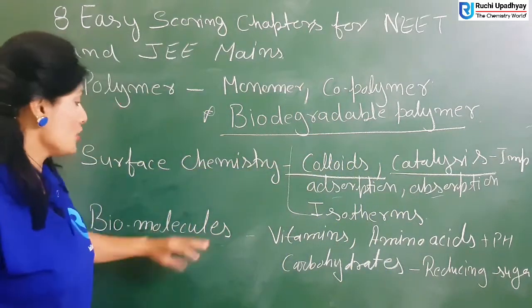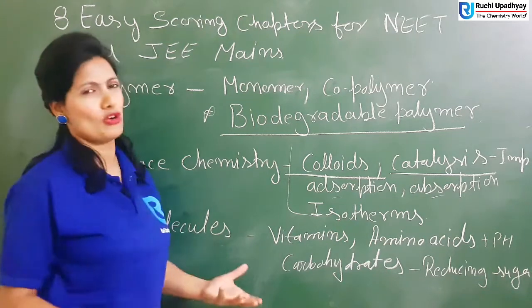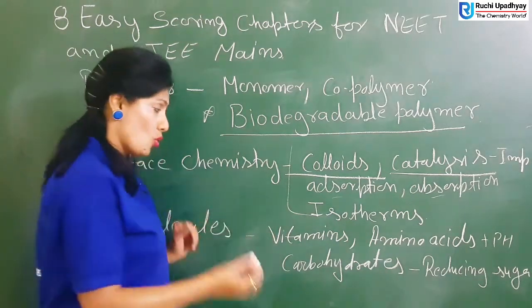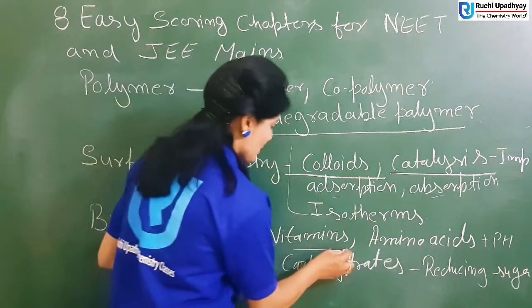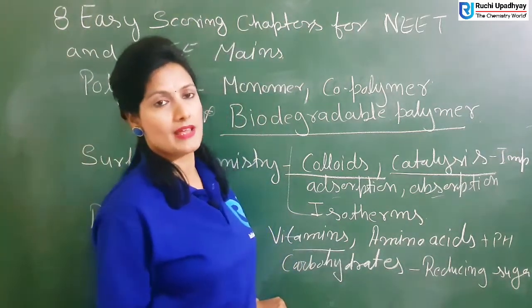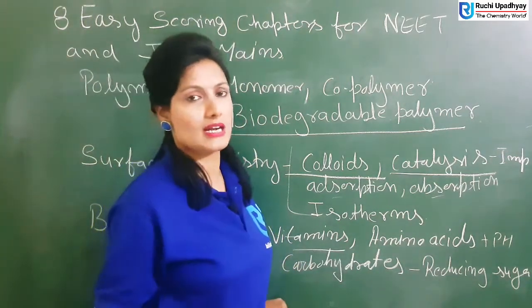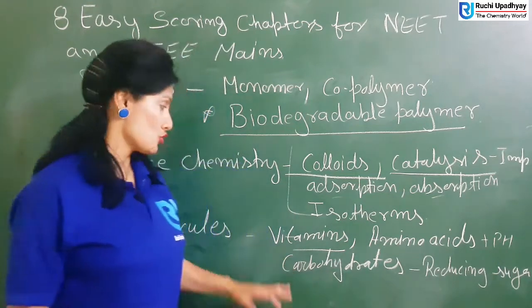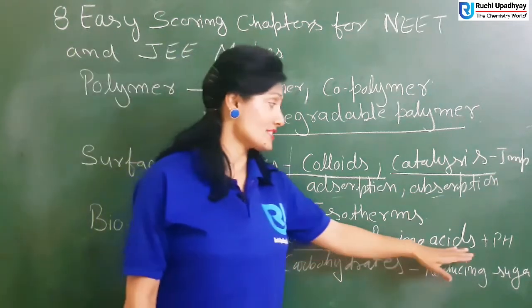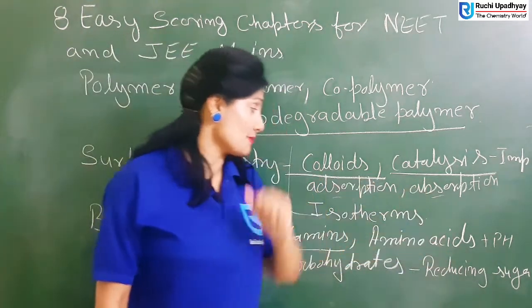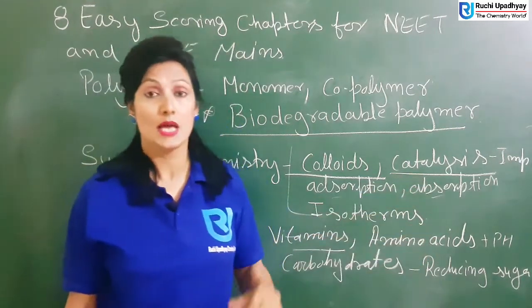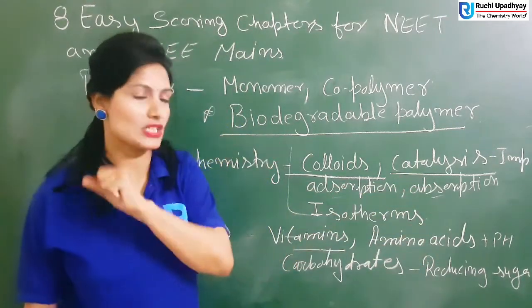If you are talking about biomolecules, you need to know amino acids, vitamins, and carbohydrates. Let's study vitamins — it is very easy. This chapter does not take a full day; you will give 2 to 3 hours and it will be finished. So study vitamins and amino acids. In amino acids, study acidic amino acids, basic amino acids, and pH value.